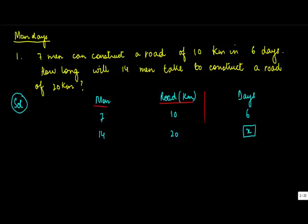Seven men will construct a road of 10 kilometers in six days. So if there were 14 men who had to construct 10 kilometers, how long will it take? So let's say 14 men, 10 kilometers—the road was same, so you'd normally ignore this variable.